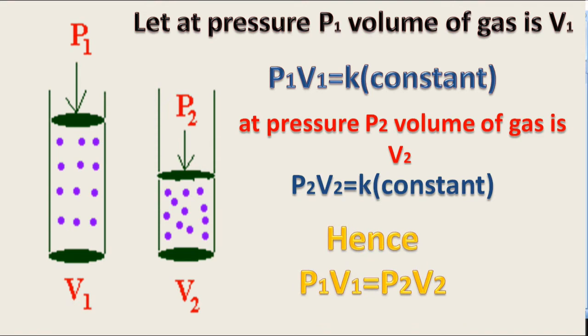Hence, P1V1 is equal to P2V2, or product of pressure and volume of gas is equal to constant.